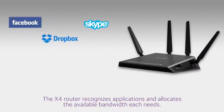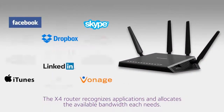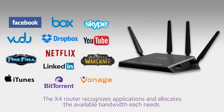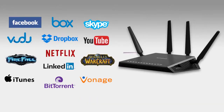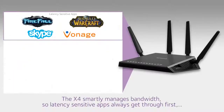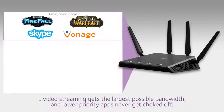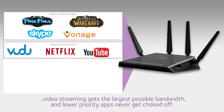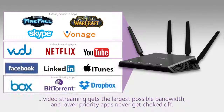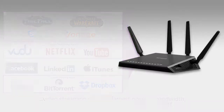First, the X4 recognizes applications and allocates the bandwidth required by each. The X4 smartly manages bandwidth so latency-sensitive apps always get through first. Video streaming gets the largest possible bandwidth, and lower priority apps never get choked off.